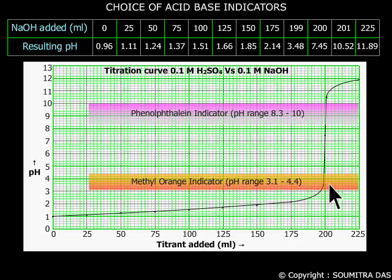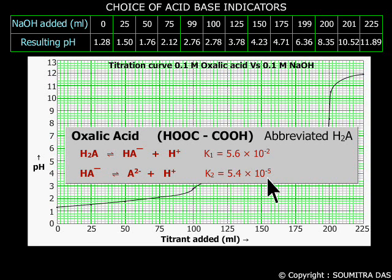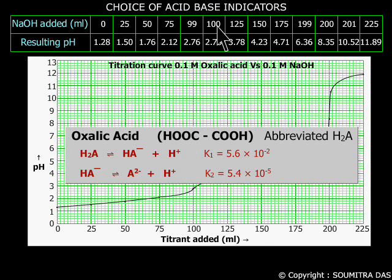Here the vertical region of the curve falls within the pH range of both phenolphthalein and methyl orange indicators, so any one can be used. Now let us come to another diprotic acid, oxalic acid, where K₁ = 5.6 × 10⁻² and K₂ = 5.4 × 10⁻⁵. Here K₁ is 1000 times bigger than K₂. So the pH of 0.1 molar oxalic acid is calculated on the basis of the first dissociation. Before the first equivalence point, which occurs when 100 ml of 0.1 molar NaOH has been added, the H+ ions from the first dissociation are neutralized, and we neglect the H+ ions from the second dissociation.